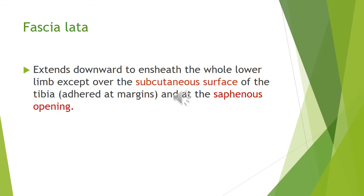The saphenous opening is located below and lateral to the pubic tubercle, about 1.5 inches below the inguinal ligament. The saphenous opening is covered by the cribriform fascia. The saphenous opening transmits the great saphenous vein and femoral vessels.